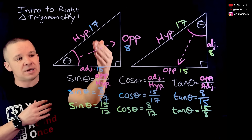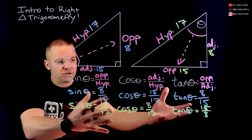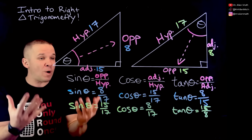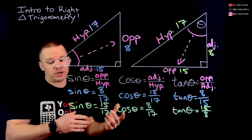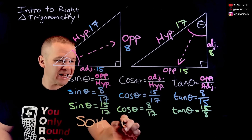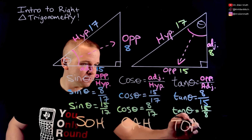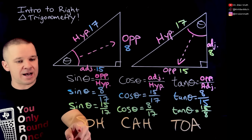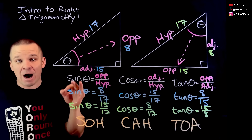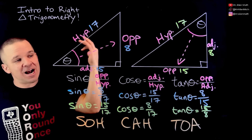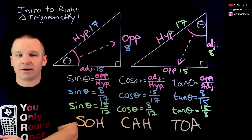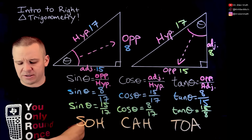So these are our three basic trig functions: sine, cosine, and tangent. And a nice way to remember these ratios is the acronym SOHCAHTOA. Sine is opposite over hypotenuse, cosine is adjacent over hypotenuse, tangent is opposite over adjacent. I would write that down on every trig test at the top.